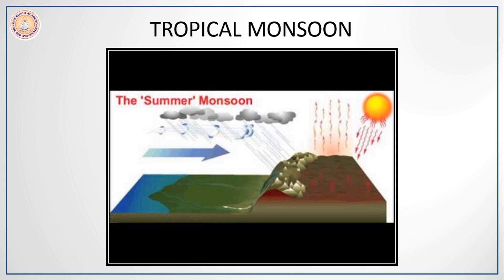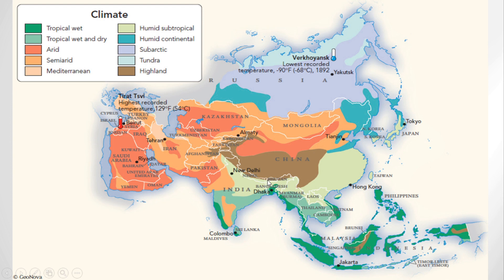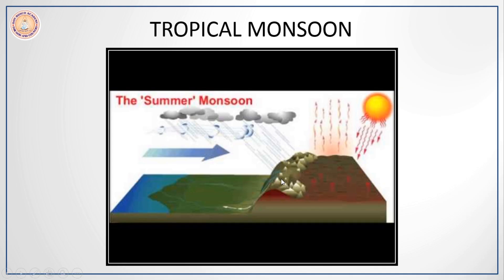The tropical monsoon type of climate is found in large areas of India, parts of Bangladesh, southeastern Asia, and also parts of China. This climate is characterized by a cool and dry winter, a hot dry summer, and a rainy season which brings very heavy rainfall to the tune of nearly 50 to 200 centimeters.